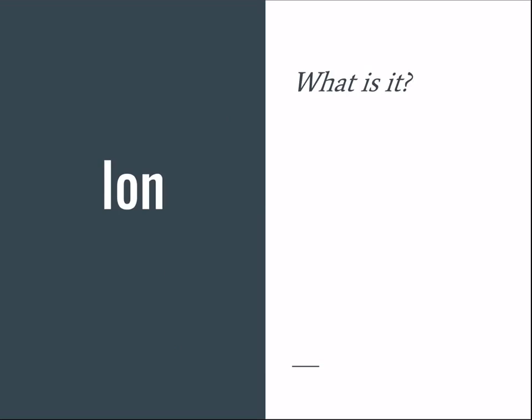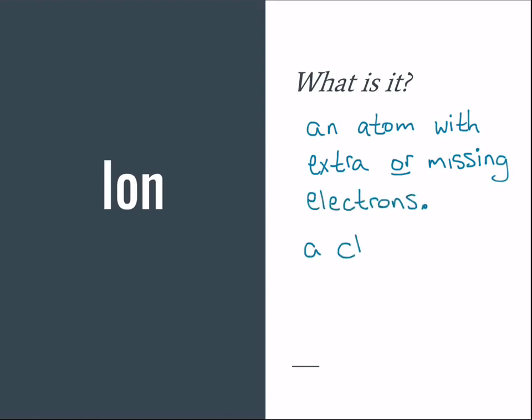What are charged atoms? Charged atoms are called ions. Let's say an ion is an atom with an extra or a missing electron. In other words, an ion is a charged atom.